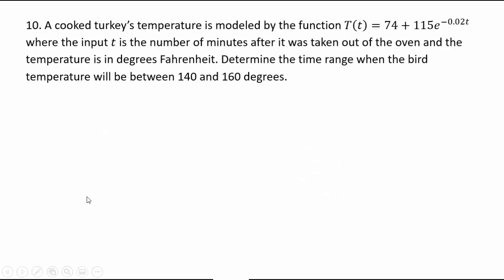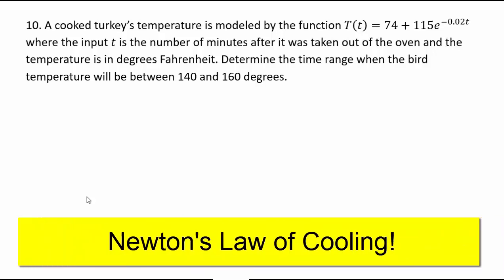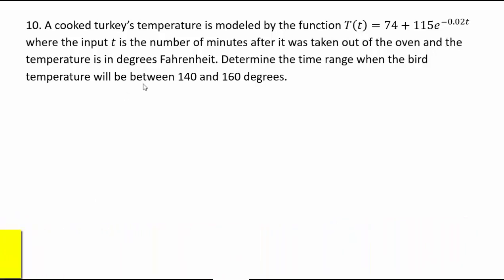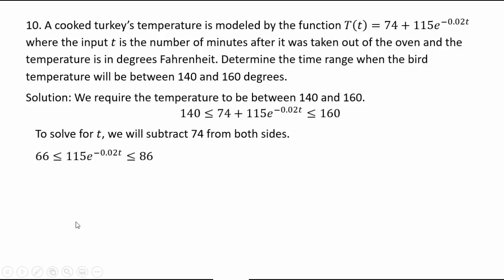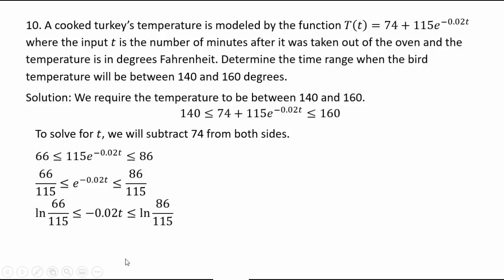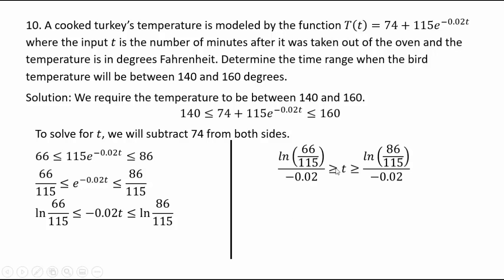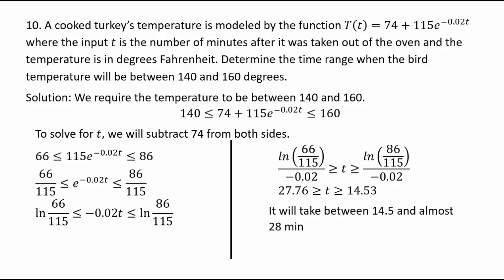A cooked turkey's temperature is modeled by T(t) equals 74 plus 115 e to the power negative 0.02t, where t is minutes after it was taken out of the oven. Determine the time range when the temperature is between 140 and 160 degrees Fahrenheit. Set up the inequality: 140 is less than 74 plus 115e^(−0.02t) less than 160. Subtract 74 from all parts, then divide by 115, then take the natural log. Dividing by negative 0.02 flips all inequality signs. Computing with a calculator gives a range of approximately 15 to 28 minutes.